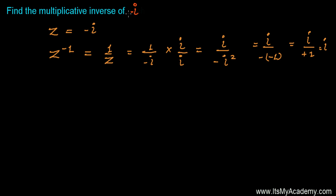The multiplicative inverse of negative iota is simply positive iota. And here, if you want to say it in this case particularly, it's just the conjugate of that. You can go with this way also.